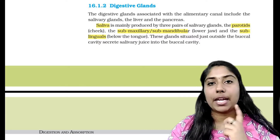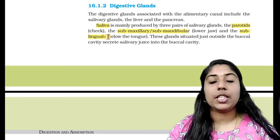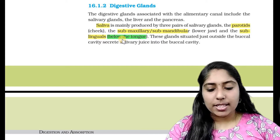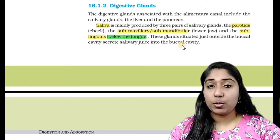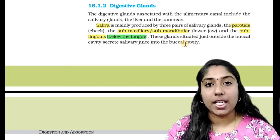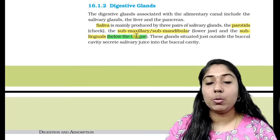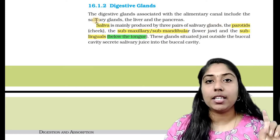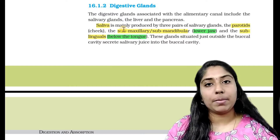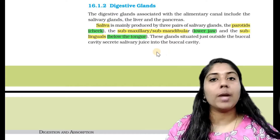The three salivary glands are: 1. Parotid, 2. Submandibular, 3. Sublingual. The sublingual gland releases saliva into the oral cavity.